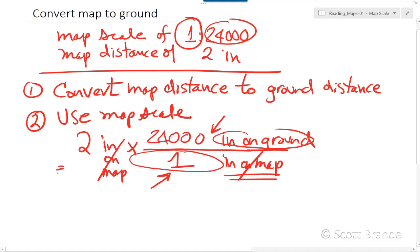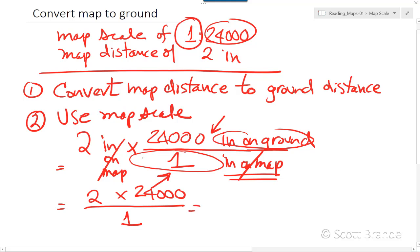We've now converted from the map to the ground by simply multiplying everything in the numerator — 2 times 24,000 — and dividing by everything in the denominator, which is just 1. That means the result equals 48,000 inches, and these are inches now on the ground.